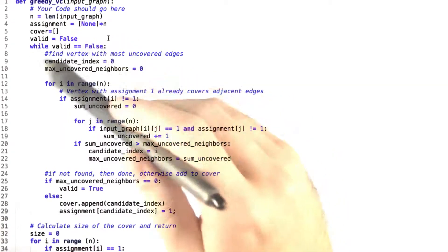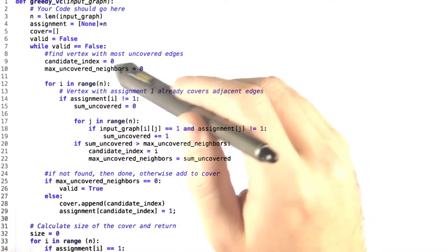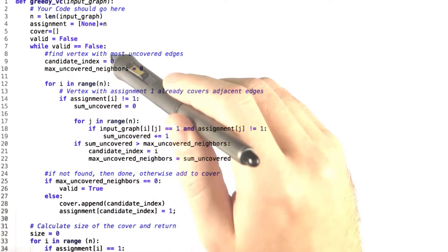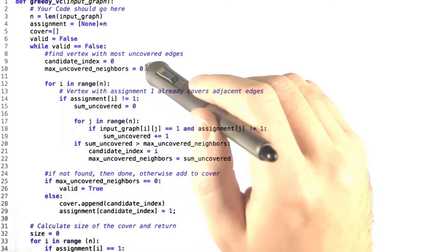While valid is false, we first check to find the vertex with the most uncovered edges. So we start with the first vertex and set candidate index to 0, and the number of uncovered neighbors that it has to 0.